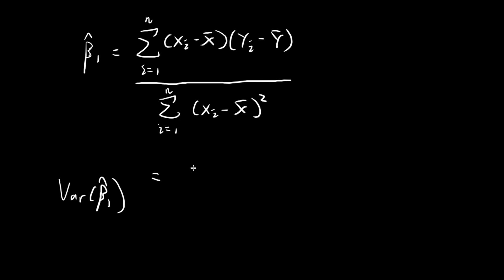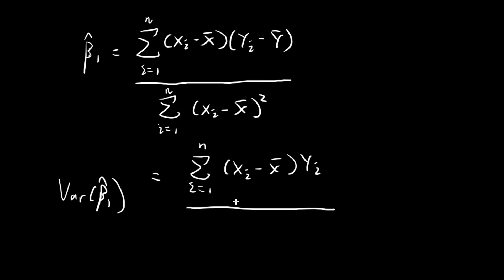Before I do that, I'm going to rearrange the numerator into something like this — the same rearrangement as in the last video. Essentially, I'm just removing the brackets, and the other term that you get will just end up being equal to 0. In the denominator, I'll use the symbol Sxx to represent this summation term.